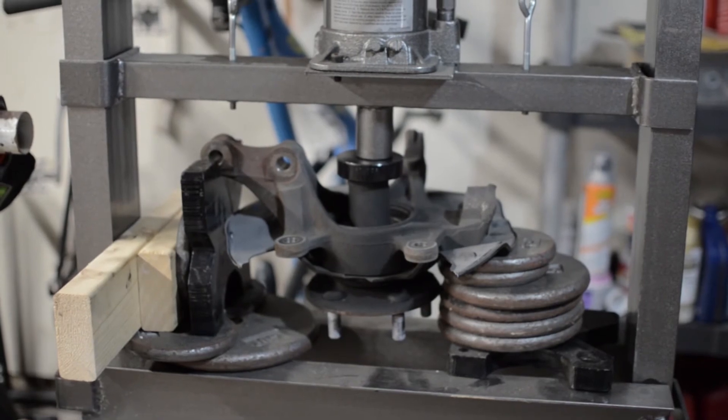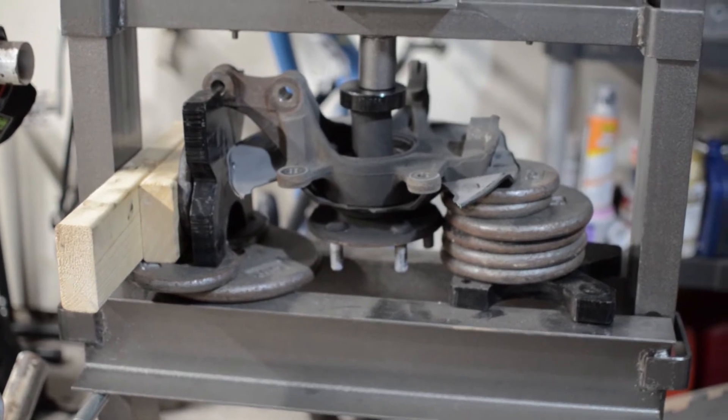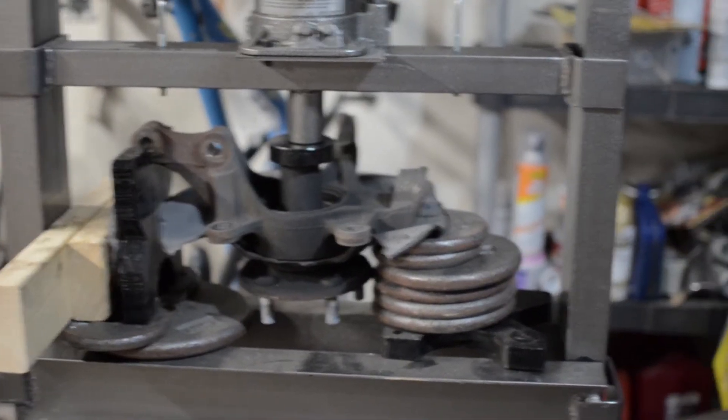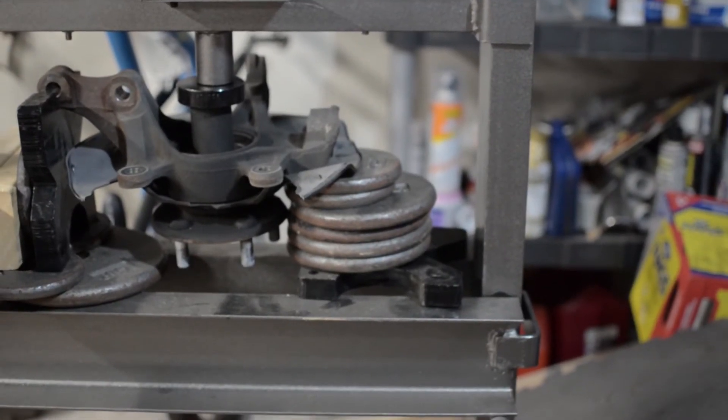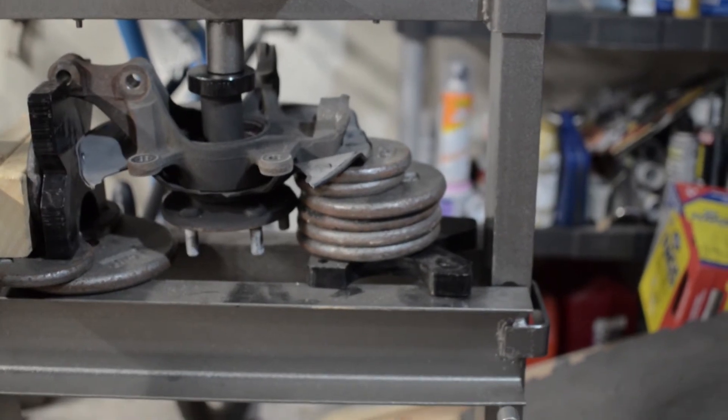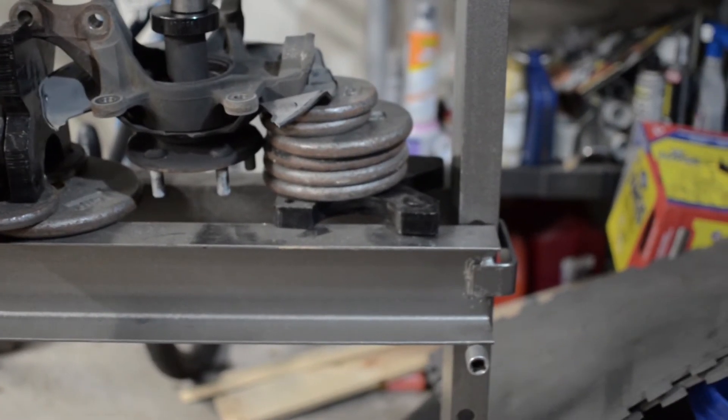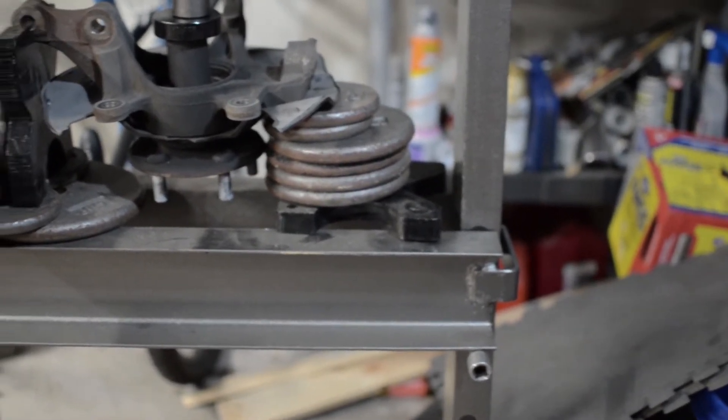I'm using a socket to press down on the actual hub flange with the studs that needs to come out before we take out the hub bearing. Over here as well, I have weight plates and another big metal bracket piece that came with the shop press.